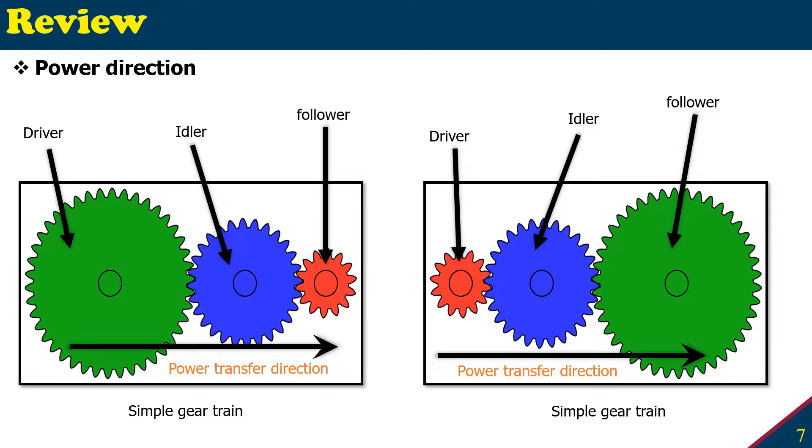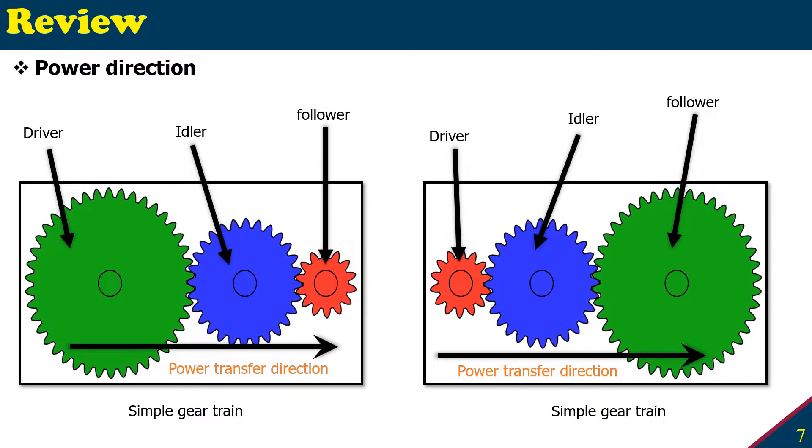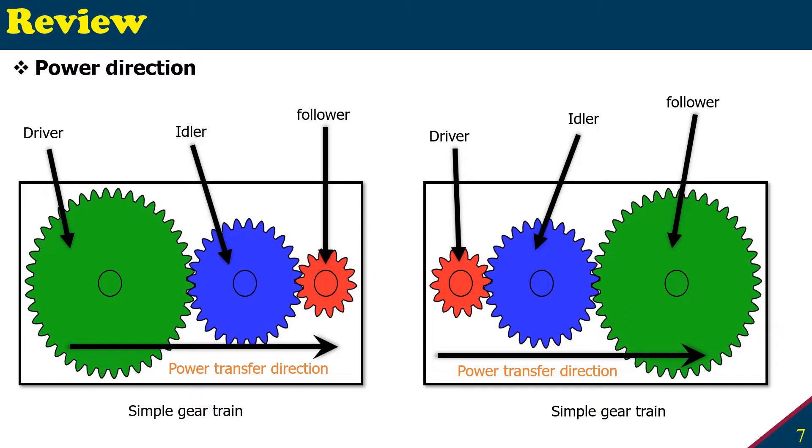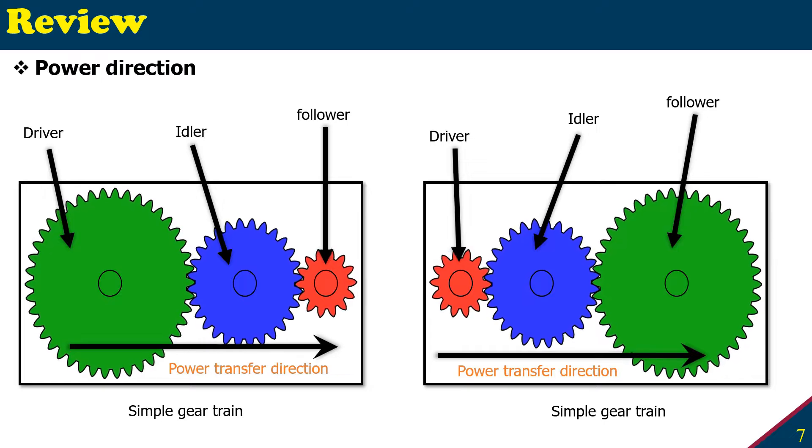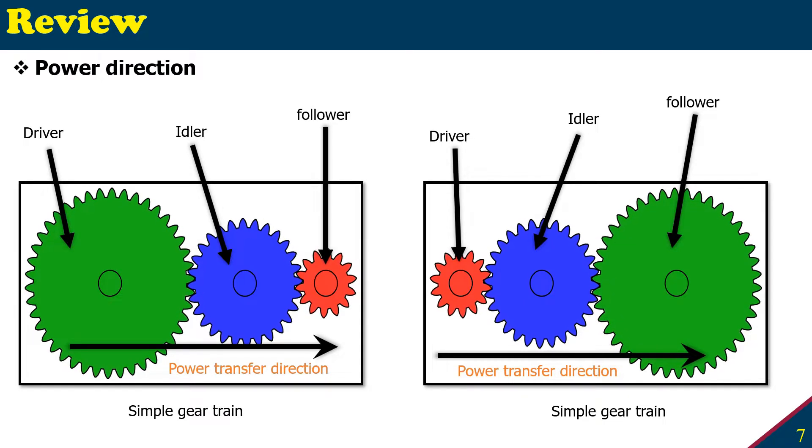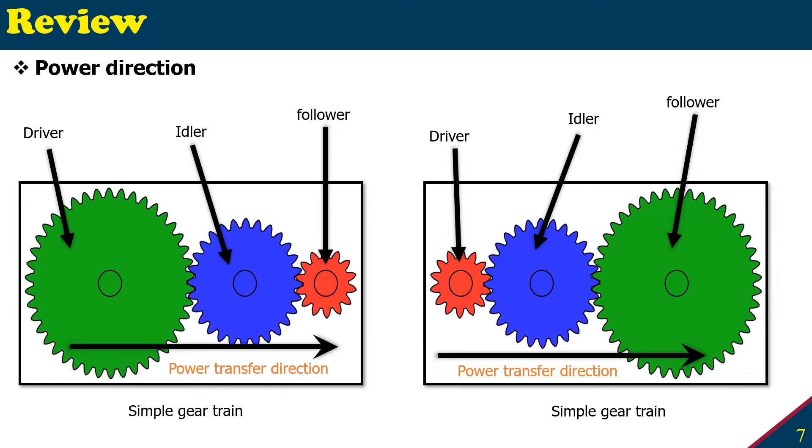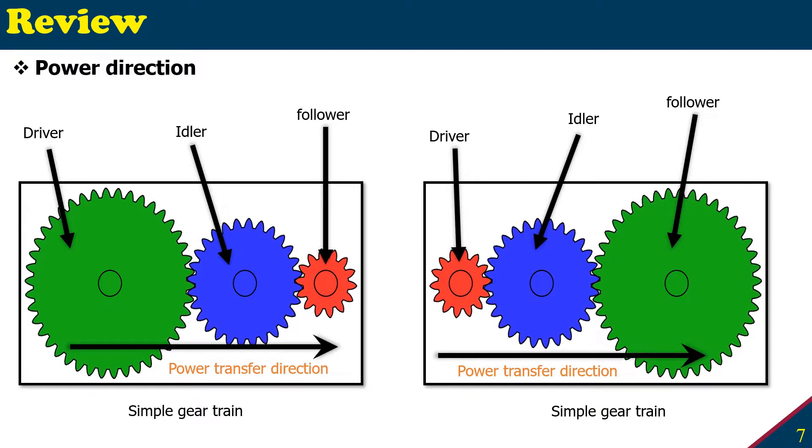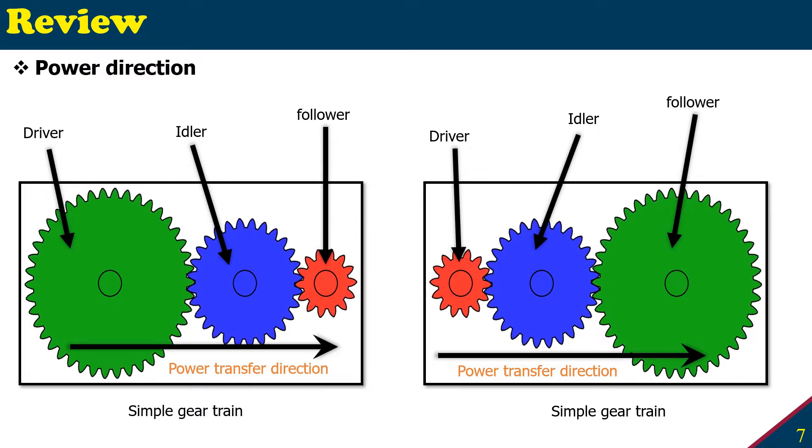If my green is the driver and my load is attached on the red one, so that will be the follower, then my power transfer will be from green to blue, blue to red.